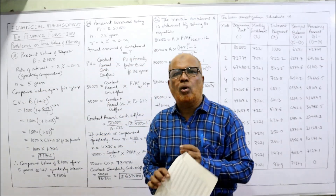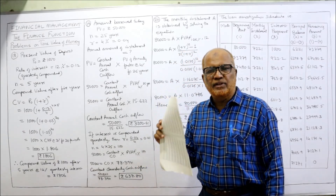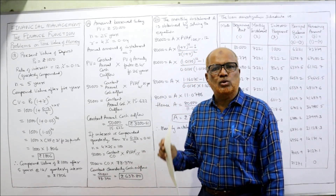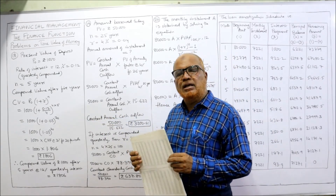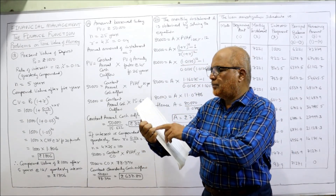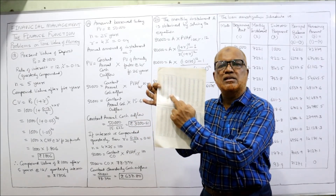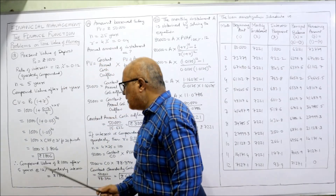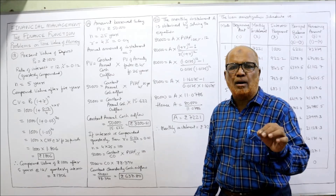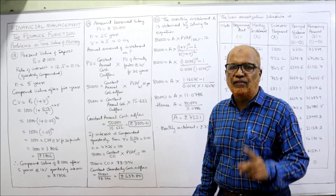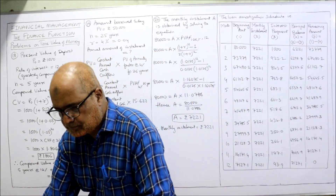From the compound value table at 3% for 20 periods, the factor is 1.806. So compound value = 1.806 × 1,000 = 1,806 rupees. This is the compound value after five years if we deposit 1,000 right now.